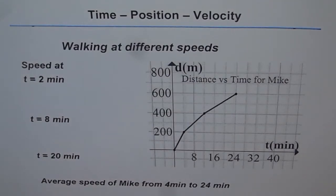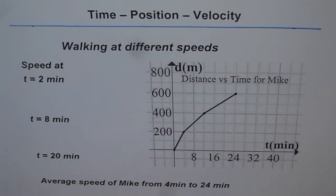Here we have a distance versus time graph and we will try to understand during the different legs shown in this graph what are the speeds, how the speed changes, and how it can be related with the slope.